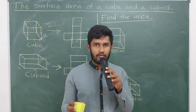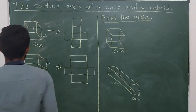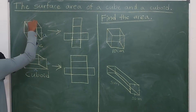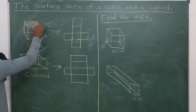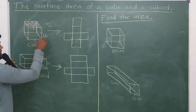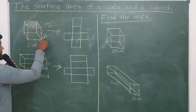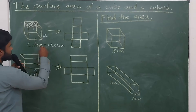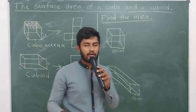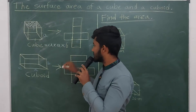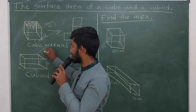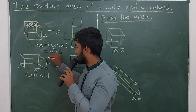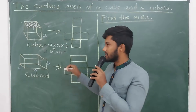The area of one face: if we consider the upper face of a cube, all sides are equal, so one side is 'a'. The area of one face is a × a = a². Multiplied by the number of faces, which is six, gives us the surface area formula: 6a².